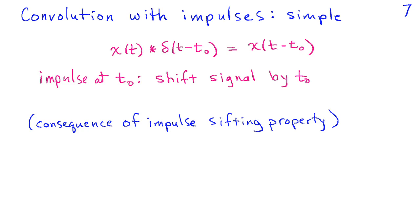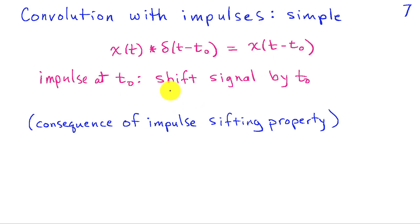A final comment: it's very simple to do convolution with impulses, and this comes up in a variety of scenarios we'll see later. The result is that if I convolve any signal x(t) with an impulse that occurs at time t₀, the convolution is just x(t − t₀). In other words, an impulse at t₀ shifts our signal by t₀ units. This is a consequence of the sifting property of the impulse.